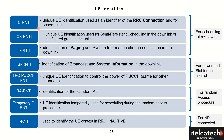If the UE is in RRC connected mode and scheduling is happening between the network and the UE, then in that case the UE is holding the identity which is C-RNTI.